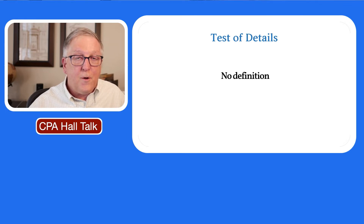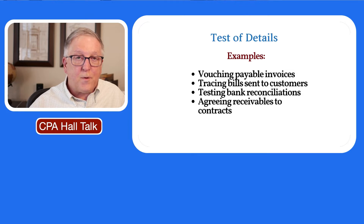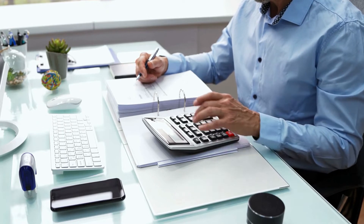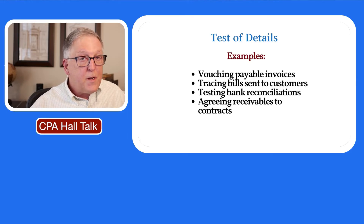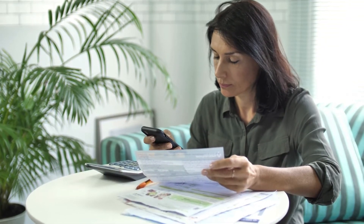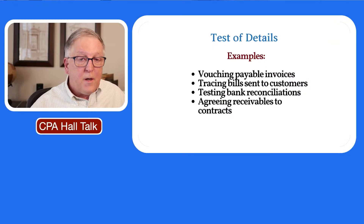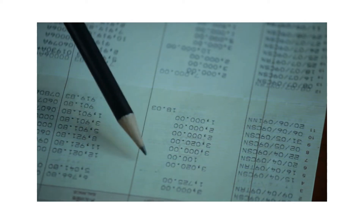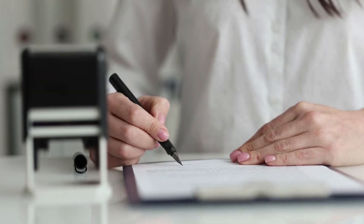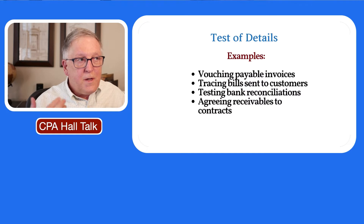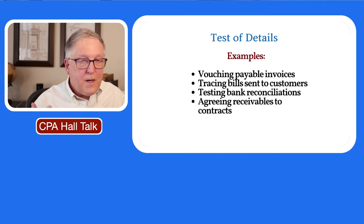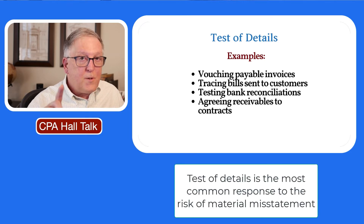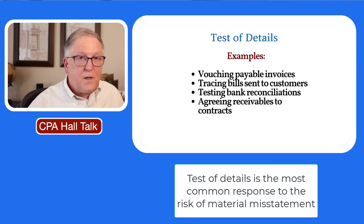These examples are very familiar if you've done any auditing at all. They include vouching payable invoices — when you do that search for unrecorded liabilities, you're doing a test of detail. Another example is tracing bills sent to customers, testing bank reconciliations, and agreeing receivables to contracts. The test of details is the most common option to respond to risk, and these are the types of procedures you most commonly perform.